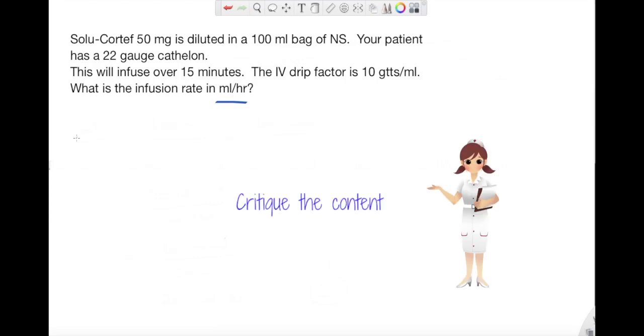Now when I go read the question, there's a lot of information in here. I have Solu-Cortef 50 milligrams diluted in a hundred mL bag of normal saline. My patient has a 22 gauge catheter. That will infuse over 15 minutes and the IV drip factor is 10 drops per mL. So there's a lot of things to look at. What I'm specifically curious about is the hundred mLs over 15 minutes, so I'm going to put that into my equation.